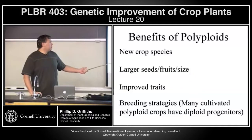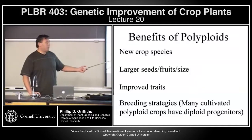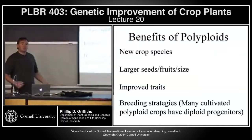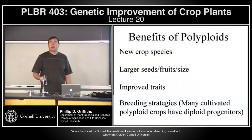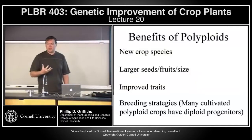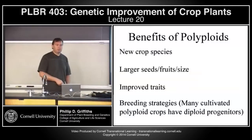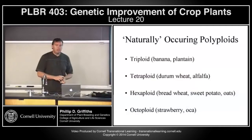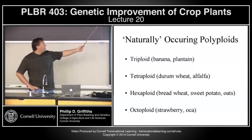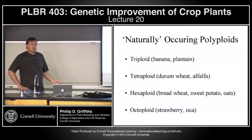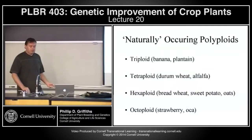We can also create polyploids for a number of breeding strategies. For instance, if the crop we're working with is a domesticated polyploid — perhaps a tetraploid — but we want to work with a trait that may be in one of the diploid relatives, then for the breeding strategy it may be better to convert that diploid into a tetraploid before starting our crossing program. Naturally occurring polyploids have been selected because of their fruit traits, so they've really come about largely through domestication rather than natural selection.